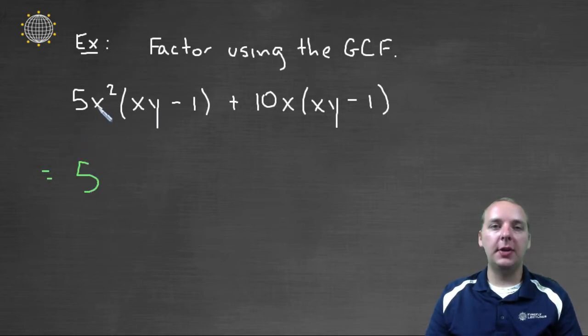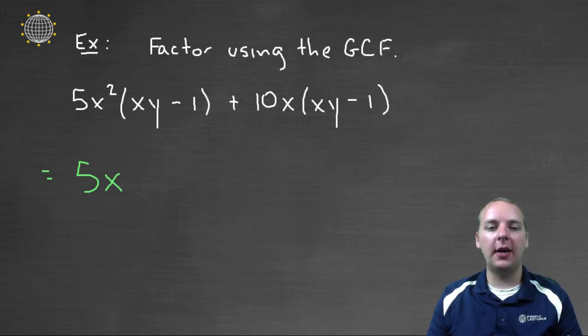The first term has a factor of x squared, and the second term has a factor of x. So there's at least an x that's common to both of those. Now how many x's can I factor out?